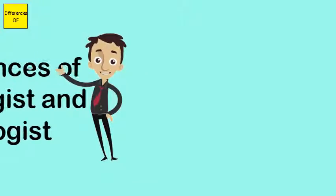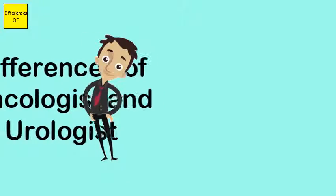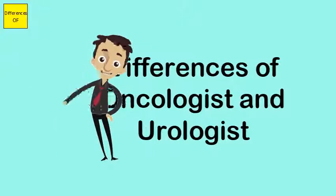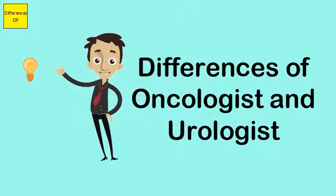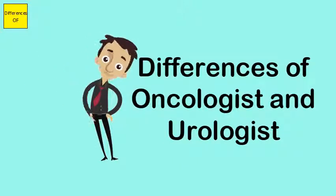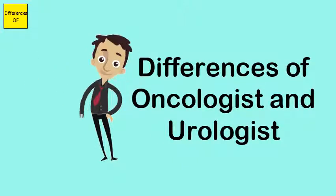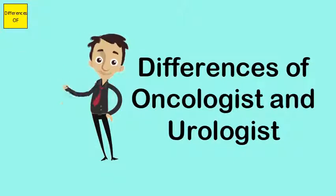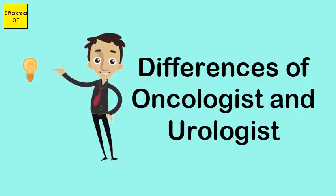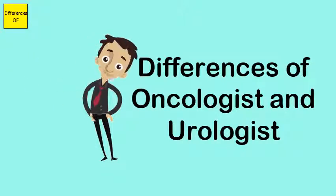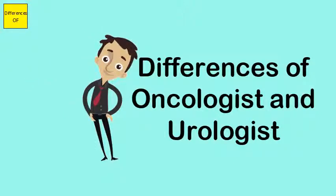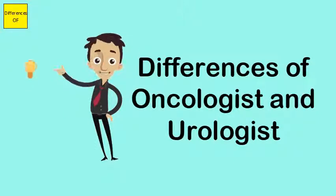Difference between Oncologist and Urologist. An oncologist is a physician who diagnoses and treats cancers. A urologist is a physician who has specialized training and knowledge related to problems and diseases of the male and female urinary tract and also male reproductive organs.